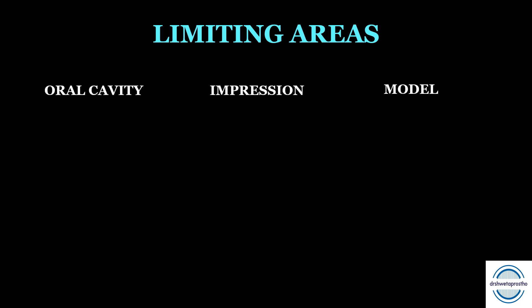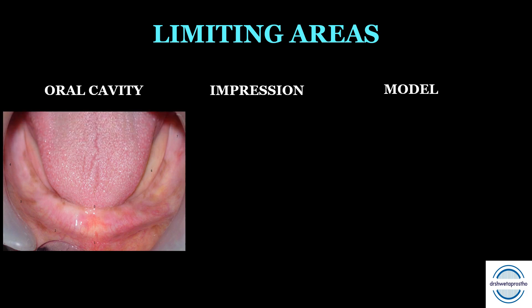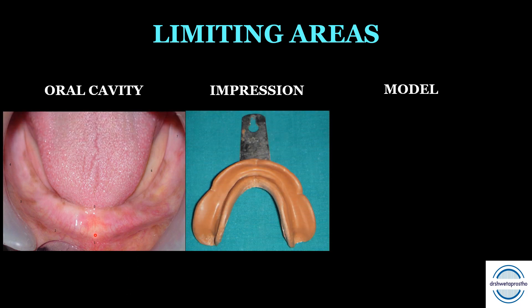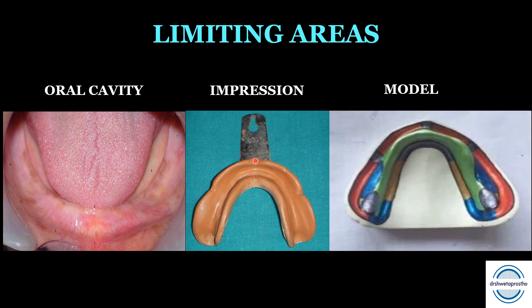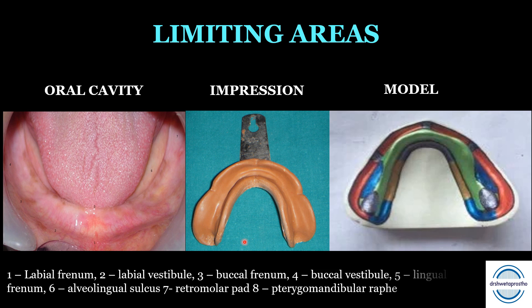The limiting or peripheral areas determine the denture borders, mainly the extension of the denture. Anteriorly, this is the labial frenum — recorded as a labial notch in the impression. On both sides of the labial frenum there is the labial vestibule, between the labial frenum and the buccal frenum, recorded as labial flange. Moving posteriorly, the buccal frenum is recorded as a buccal notch in the impression, and here is the buccal frenum attachment on the cast.